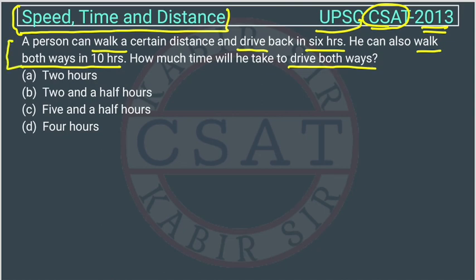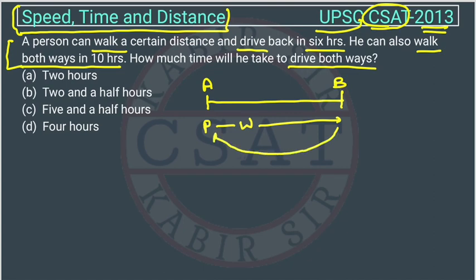You can answer this question through common sense. Suppose this is a distance. In the first question, suppose person P is walking from point A to point B, and then he is driving - like a two wheeler or four wheeler. So total time he is taking is how much?